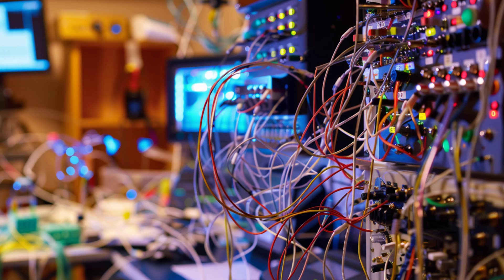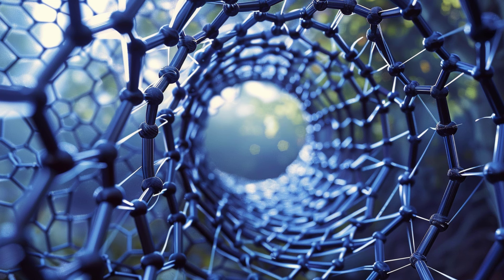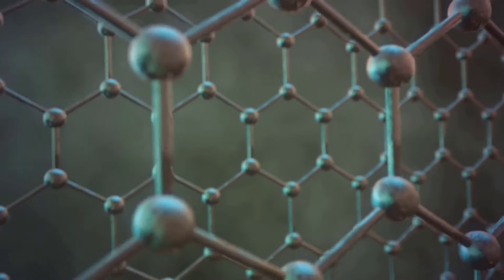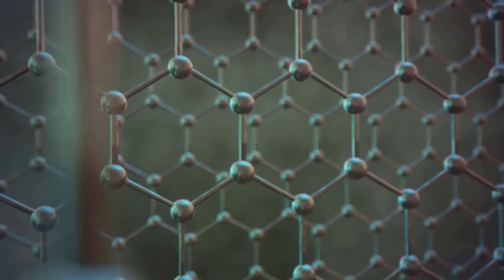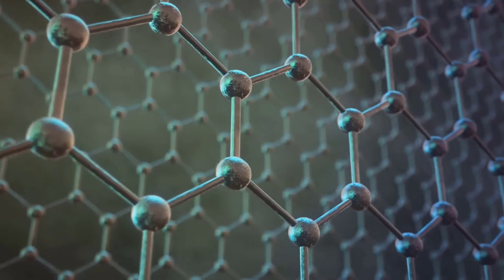Now, imagine tiny tubes with extraordinary properties. Welcome to the world of carbon nanotubes. These nanotubes, often abbreviated as CNTs, come in two main types: single-walled and multi-walled. Single-walled carbon nanotubes, or SWCNTs, consist of a single layer of carbon atoms arranged in a tube, while their multi-walled counterparts, MWCNTs, are composed of several concentric layers of these carbon tubes.